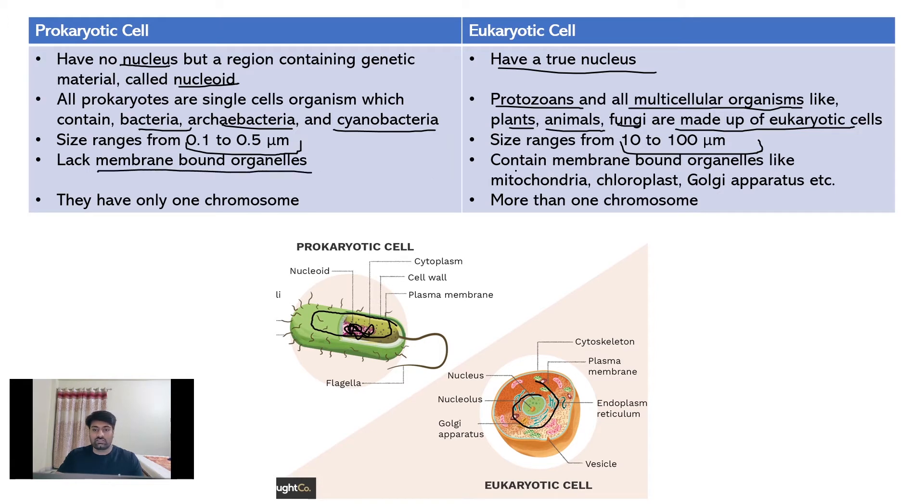Prokaryotic cells lack membrane-bound cell organelles, while eukaryotic cells have membrane-bound cell organelles like mitochondria, Golgi apparatus, etc. Prokaryotic cells have only one chromosome, while in eukaryotic cells, majorly more than one chromosome is present.